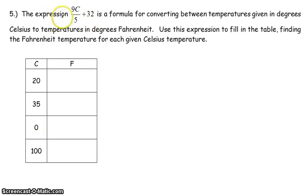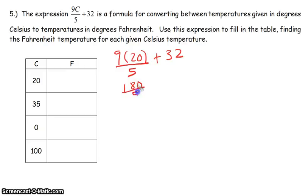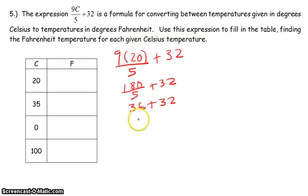Example 5 deals with a formula. The Fahrenheit formula is 9C over 5 plus 32, which converts degrees Celsius to degrees Fahrenheit. We use this expression to fill out a chart. Substituting 20 for C: 9 times 20 is 180, divided by 5 is 36, plus 32 equals 68.